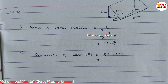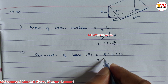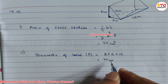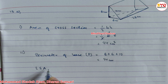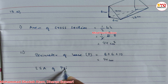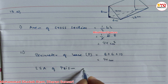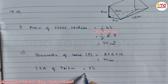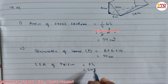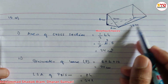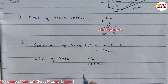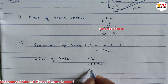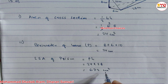So 8 + 6 + 10 = 24. Now we have to find the LSA of the prism. Lateral surface area of prism formula is P into H. P means 24, and H is the height of the prism, which is 28. So multiply 24 into 28 and we get 672 cm square.